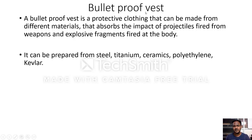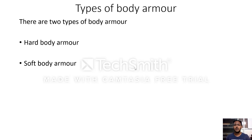Ceramics and composite materials were also used for body armors. A bulletproof vest is a protective clothing that can be made from different materials that absorb the impact of projectiles fired from weapons and explosive fragments fired at the body. It can be prepared from steel, titanium, ceramics, polyethylene, and Kevlar.